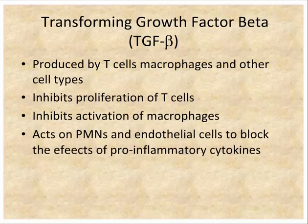TGF-beta is primarily an inhibitory cytokine that helps regulate the immune response. It's produced by T cells, macrophages, and other cell types. It blocks the activity and activation of macrophages, and acts on PMNs and endothelial cells to dampen responses. Like IL-10, it is one of the main inhibitory cytokines.